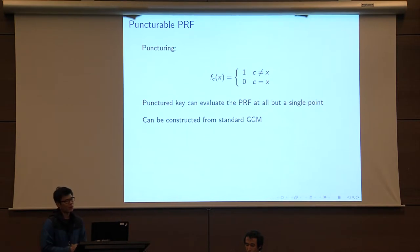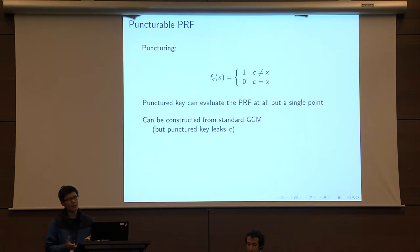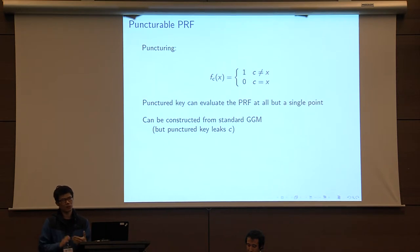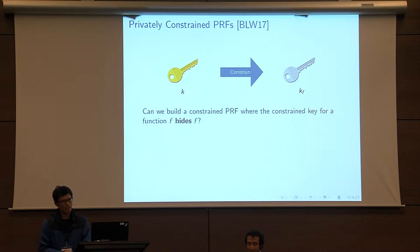It turns out that puncturable PRFs can be constructed from the standard GGM tree-based construction in a pretty straightforward way. One thing to note about this construction is that the puncture key must necessarily contain information about the actual puncture point c. So a natural question is: can we construct a puncturable PRF where the puncture key does not leak any information about the underlying puncture point c? More generally, can we build a constraint PRF where the constraint key does not leak any information about the associated constraint function f?